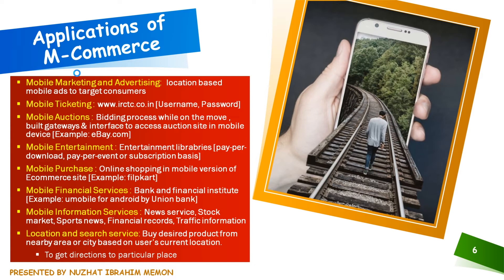The first application of M-commerce is mobile marketing and advertising. One of the best and most popular ways for companies to reach a large audience is through mobile advertising. Advertising on the internet has become a major source of income for most portals. Many retailers offer location-based mobile advertisements to target consumers who are really interested and willing to buy their product, thereby generating good revenue and increasing sales. Next is mobile ticketing — users can easily buy air, rail, or movie tickets on their mobile device, and after booking, the user gets an e-ticket message directly on the mobile device. In India, IRCTC provides mobile ticketing service.